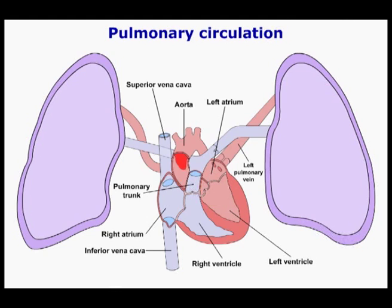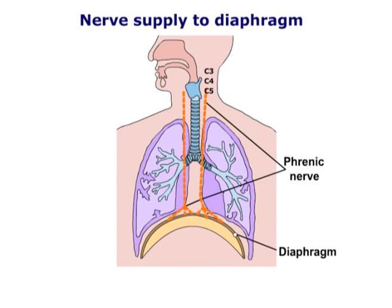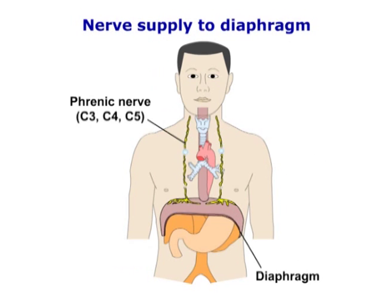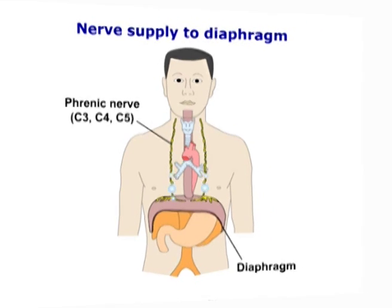The phrenic nerve, arising from C3, C4, and C5, descends the neck then through the mediastinum to pierce the diaphragm, supplying it from its inferior surface.